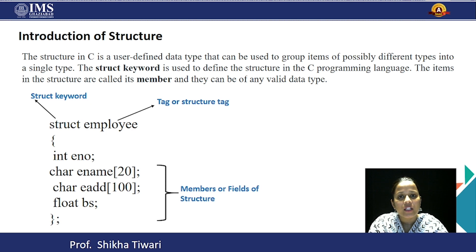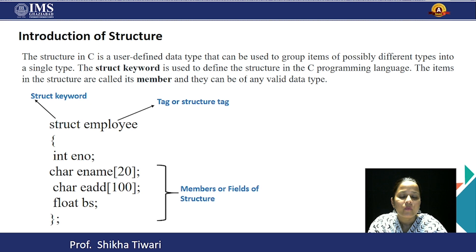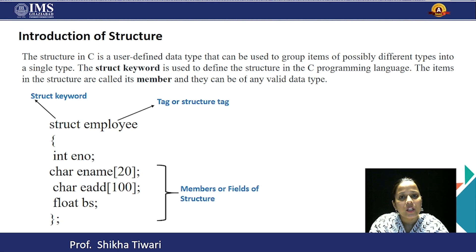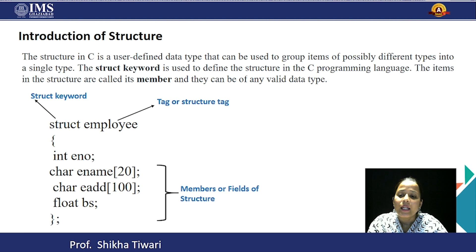But what is in structures? When you create a structure, within that single structure you can store multiple different kinds of data types. For example, if you have a structure called employee, in this employee structure there is employee name, employee number, employee address, and basic salary.